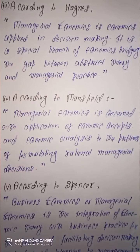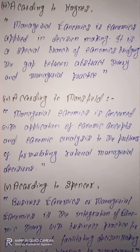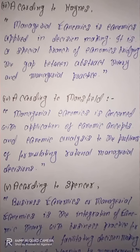Next definition is according to Haines. Haines के according, managerial economics is economics applied in decision making. It is a special branch of economics bridging the gap between abstract theory and managerial practice. यानि कि इन्होंने managerial economics को decision making में applied economics के नाम से call किया। यह economics की वो special branch होती है जहां abstract theory और managerial practice के बीच के gap को complete किया जाता है — यानि कि managerial economics इन दोनों के बीच एक bridge का काम करता है।